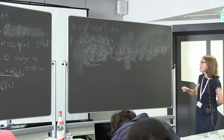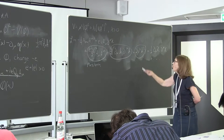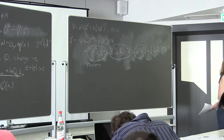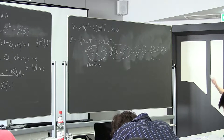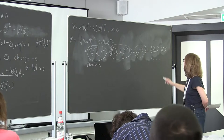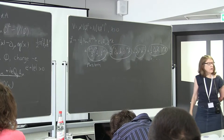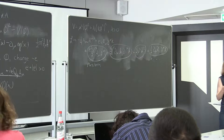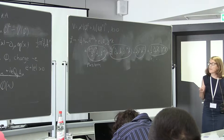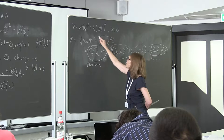I've got a mass term for h. Remember μ² is negative, so the sign is right. I've got a kinetic energy term for the Goldstone boson χ, so it's propagating. And then there's this troublesome mixing term between the gauge field A and the Goldstone boson χ.